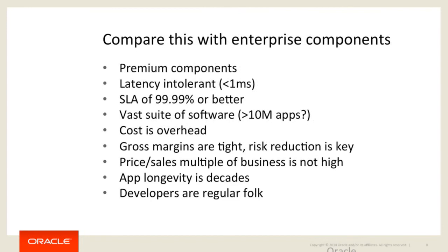Now let's compare this with enterprise. First of all, they're built out of premium components — and it'll be obvious why shortly. The systems are typically latency intolerant, because you typically have systems talking to systems. So you have Wells Fargo running a large banking system — every single transaction has to be handled very fast, because everything has to be serialized. Moving money between accounts has to be very strictly serialized. You can't do an approximation of it.